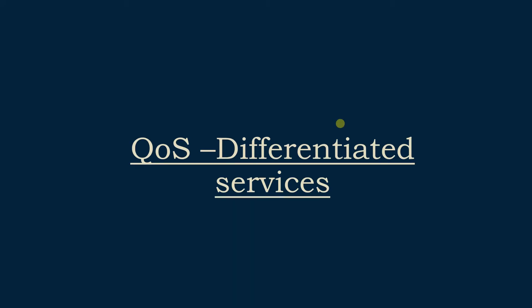Hello viewers, welcome back to the second video of the QoS series. In this video we are going to see about differentiated services. We have seen in the earlier video that QoS has four different models, and the fourth model is differentiated services, which is predominantly used in the IP world. Let's see what the differentiated services model contains.